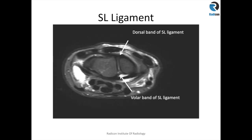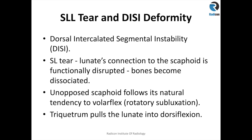Here is an axial view of the scapholunate ligament. The dorsal band can be seen between the scaphoid and lunate, and that is the volar band of the scapholunate ligament. As mentioned earlier, the dorsal band is the thickest part and the volar band is the weaker part of the scapholunate ligament.